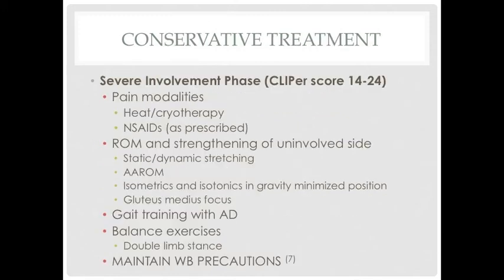Treatment of LCP can be broken down into three phases, all of which may include pain modalities, range of motion and strengthening exercises, gait training, and balance exercises. The severe involvement phase specifically benefits from heat or cryotherapy, NSAIDs, static and dynamic stretching, active assisted range of motion, isometrics and gravity-minimized exercises with a focus on gluteus medius strengthening, gait training with an assistive device, and double-limb balance exercises. It is vital to maintain physician weight-bearing precautions during this phase.